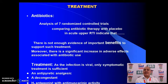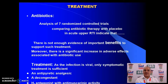Doctors generally prescribe antibiotics but they should not be prescribed, because results from seven randomized controlled trials comparing antibiotic therapy with placebo in acute upper RTI indicate that there is not enough evidence of important benefit to patients in such treatment. So treatment is generally symptomatic, because antibiotics are used for bacterial infections. Either an antipyretic analgesic, a decongestant, and an H1 antagonist with anti-muscarinic activity should be prescribed.